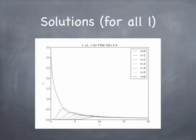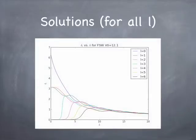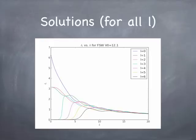If I make the potential even deeper — here's a 12.1 potential — the L equals 0 phase starts at 2 pi, L equals 1 and L equals 2 start at pi, and all the higher ones start at 0. The interpretation is that even at 0 energy you get a phase shift, meaning two bound states for L equals 0, and one bound state each for L equals 1 and L equals 2. The important insight is that you can discover things about the potential's ability to hold particles in bound states based on the phase shift you see from a scattering experiment.